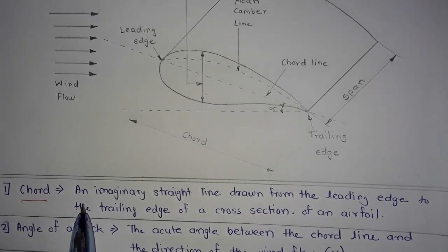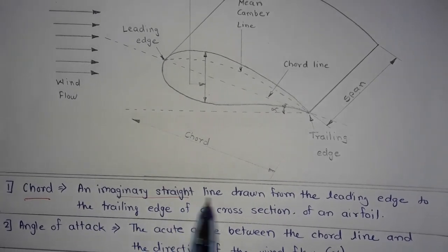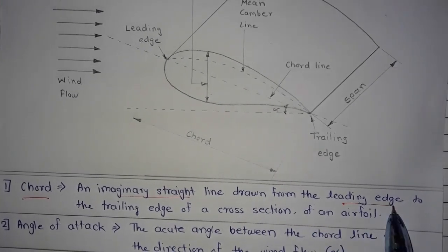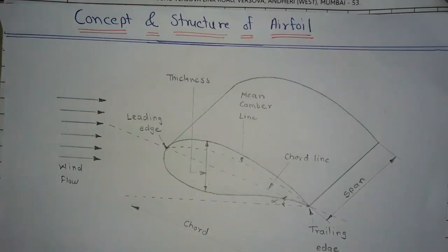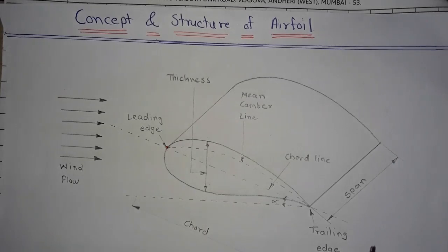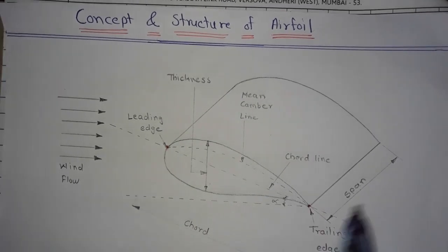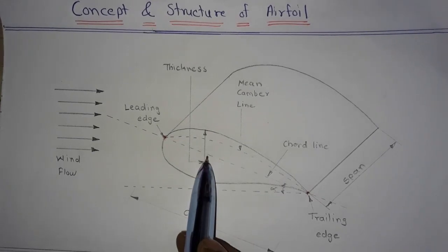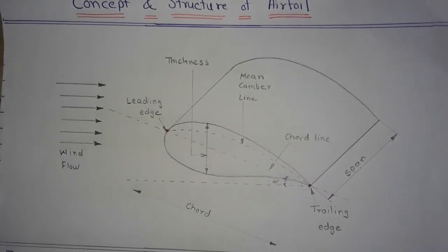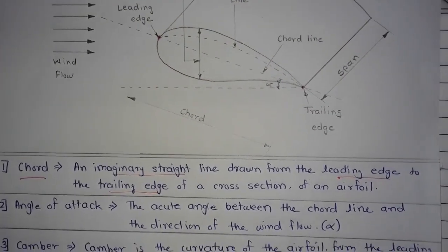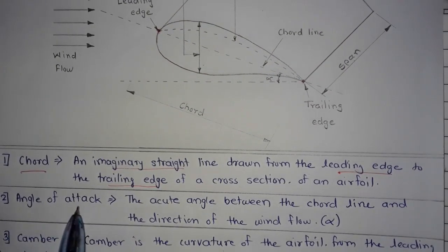Cord is an imaginary straight line drawn from the leading edge to the trailing edge of a cross section of an airfoil. The start of an airfoil is called the leading edge and the end of an airfoil is called the trailing edge. This imaginary line is called the cord.